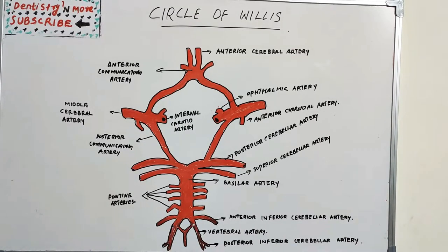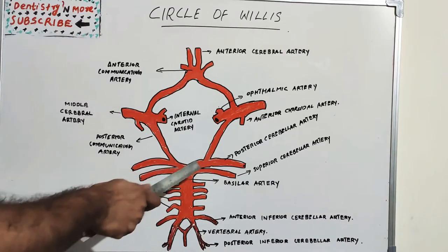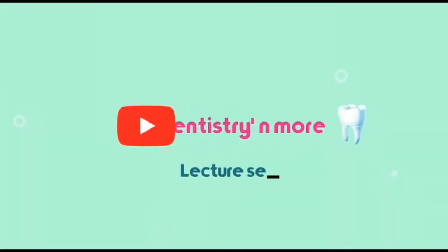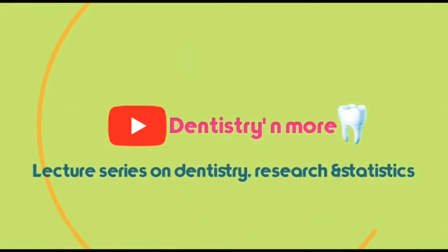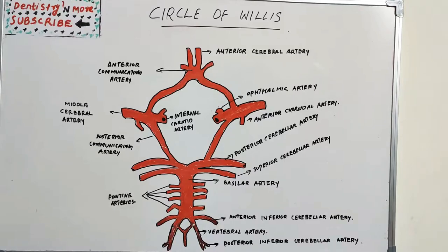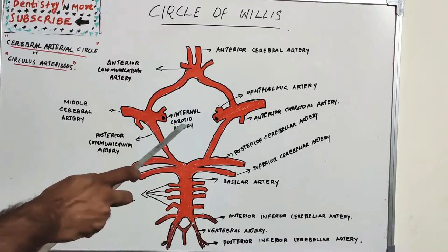Hello everyone, welcome back to another session in Dentistry M.O. Today we have a small topic in human anatomy: the Circle of Willis. It is a commonly asked short note in university exams. The Circle of Willis is also known as the cerebral arterial circle or circulus arteriosus.